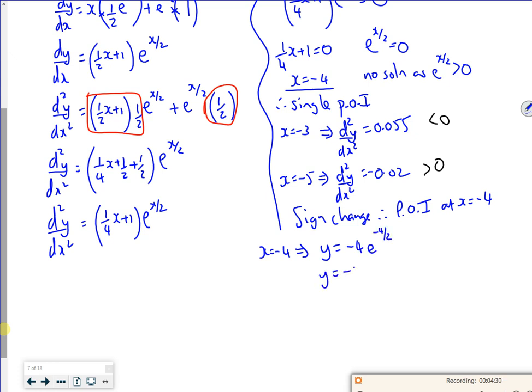So y is minus 4e to the minus 2. So my coordinate is minus 4, minus 4e to the minus 2. There we go.